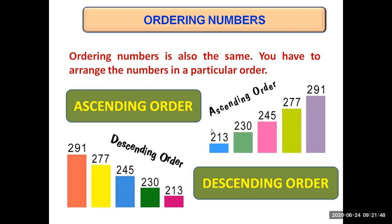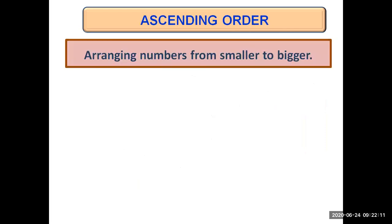In ascending order, the smallest number is put at the first place and then we go stepwise toward the greater number. Whereas in descending order, the biggest number is placed at the first place and then we go stepwise towards the smallest number. Ascending order means arranging numbers from smaller to bigger — the smallest number will be placed at first place and then we go stepwise towards the bigger numbers.